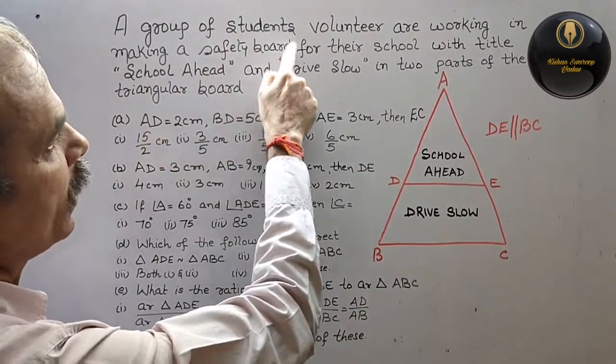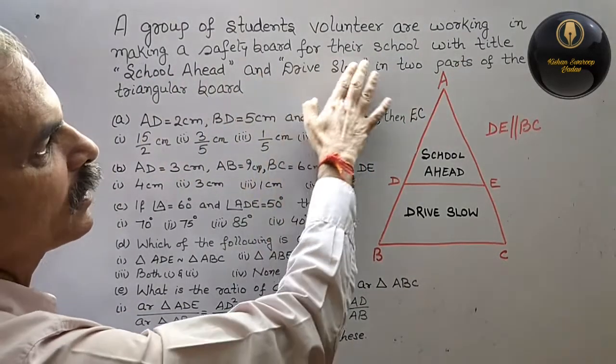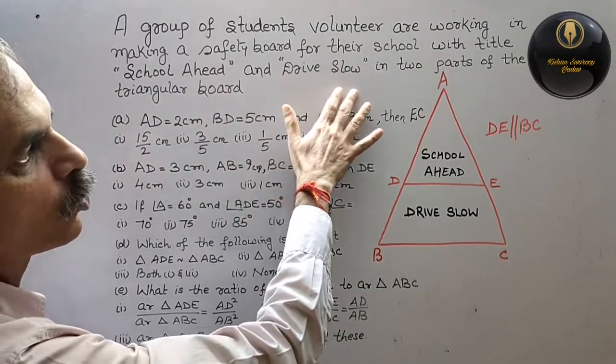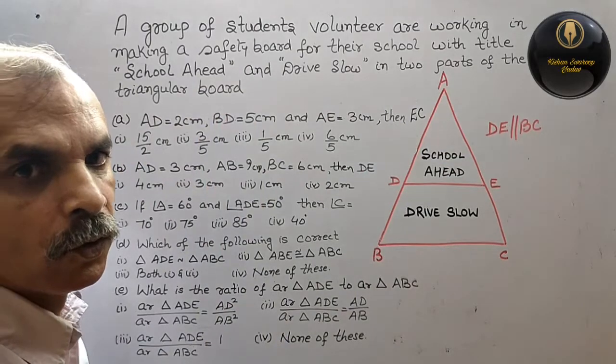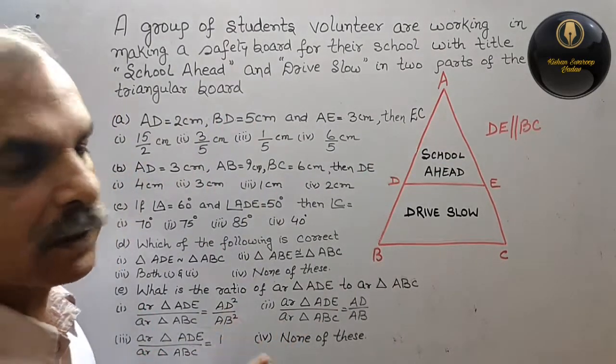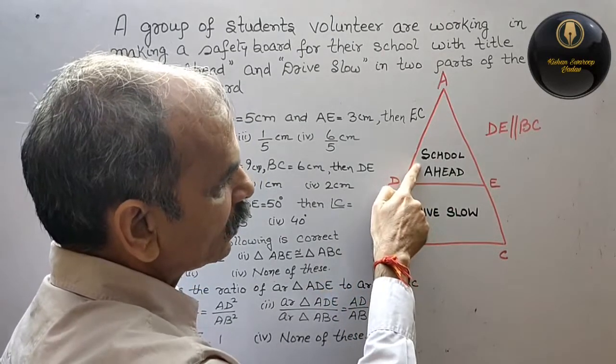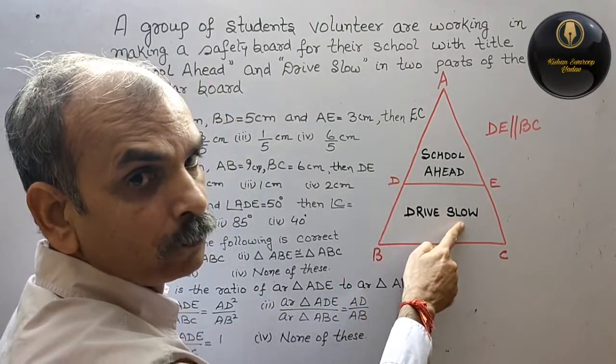A group of students volunteers are working in making a safety board for their school with titled School Ahead and Drive Slow in two parts of the triangular board. Now, they are given this.